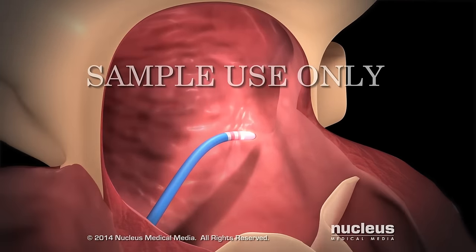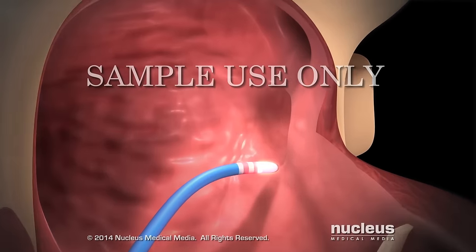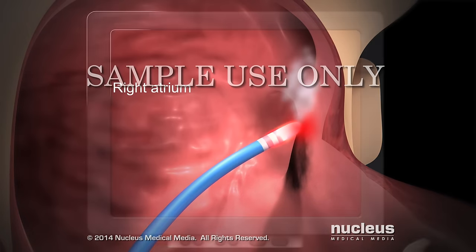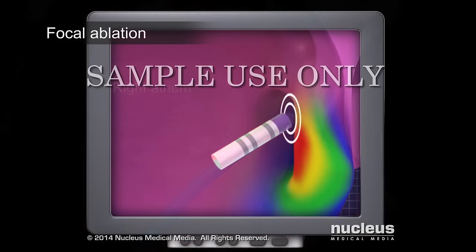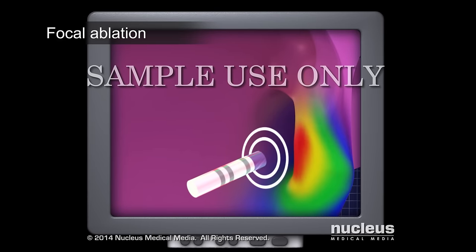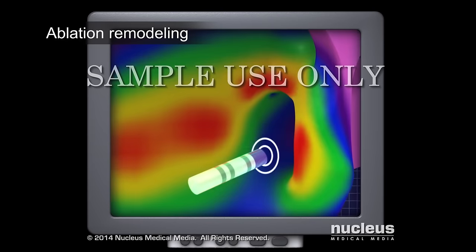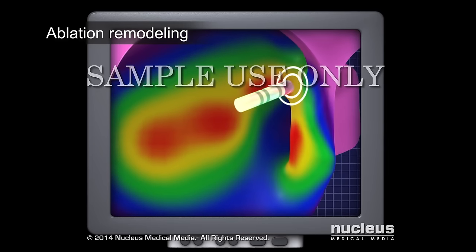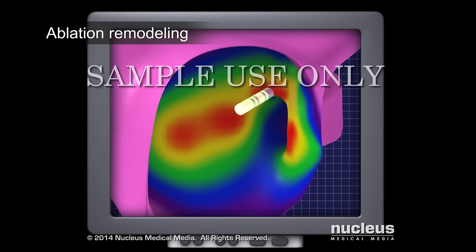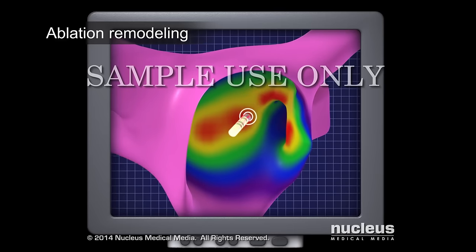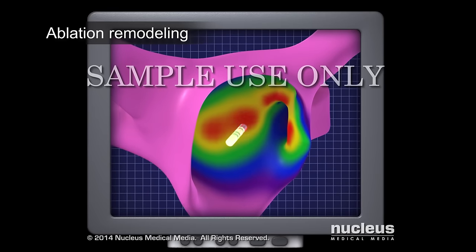For an atrial arrhythmia, a doctor will ablate the atrial tissue causing it. If the affected tissues are small, well-defined areas, the procedure is called focal ablation. Or if the affected tissues are larger areas with more complex rhythm disturbances, the doctor may perform a procedure called ablation remodeling.